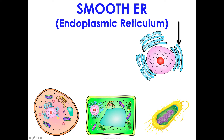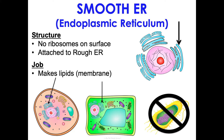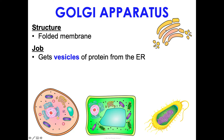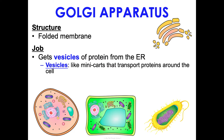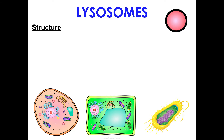The smooth ER is just outside the rough ER. It has no ribosomes — that's why it's called smooth. One of its main functions is making lipids to help build membranes. The Golgi apparatus — also called the Golgi body — is a stack of folded membrane. It accepts vesicles of protein from the ER; vesicles are like mini carts that move proteins around the cell. The Golgi then processes, sorts, and ships those proteins wherever they need to go.